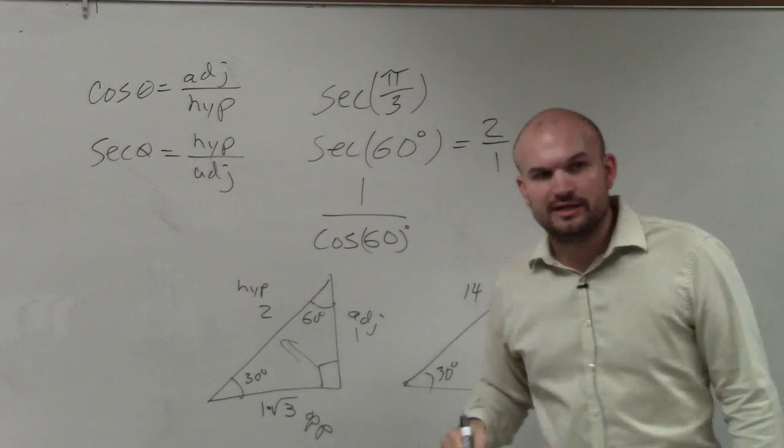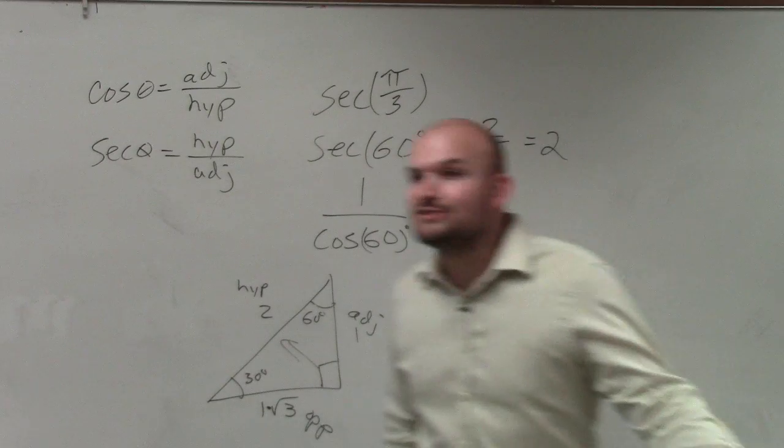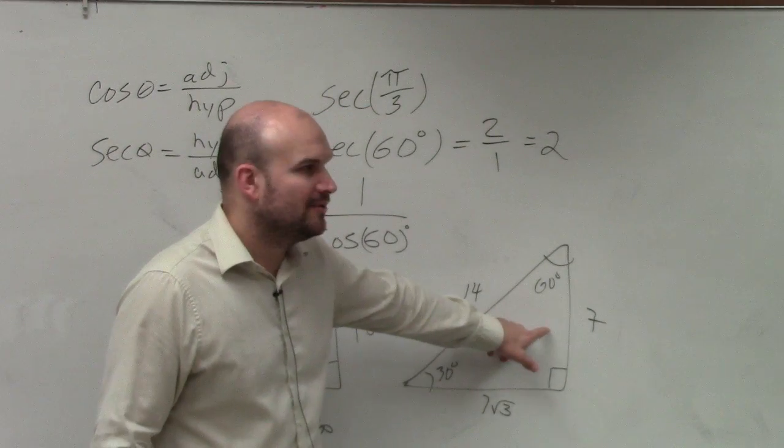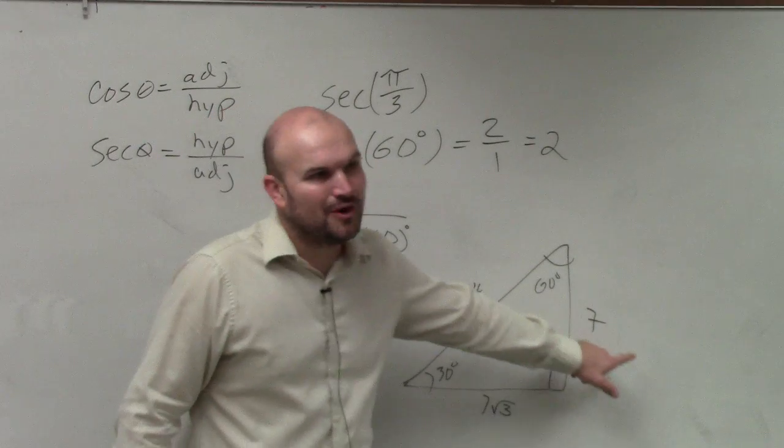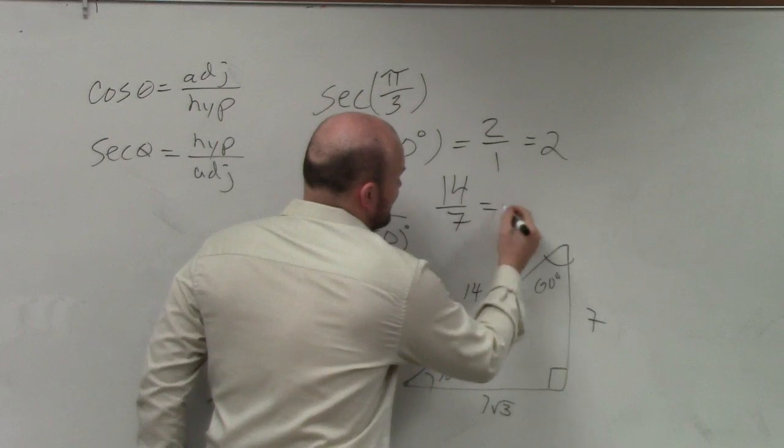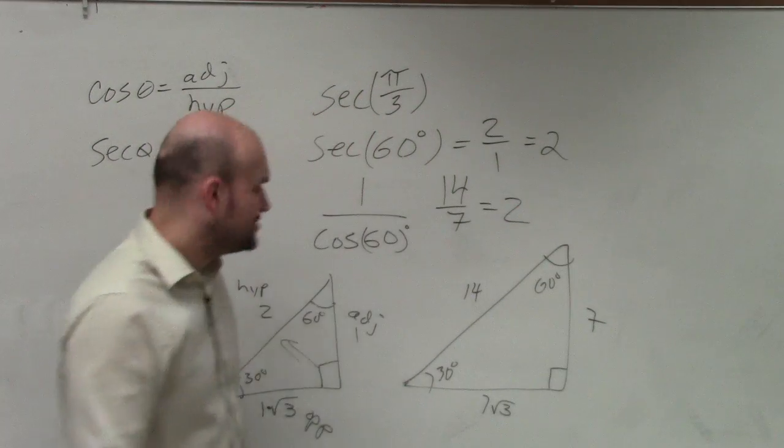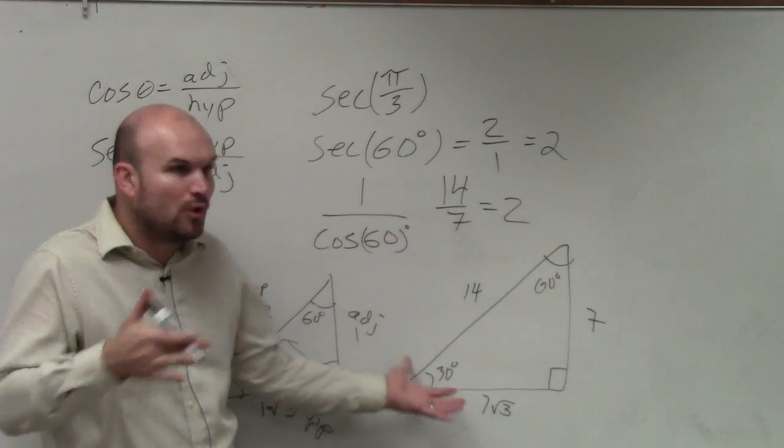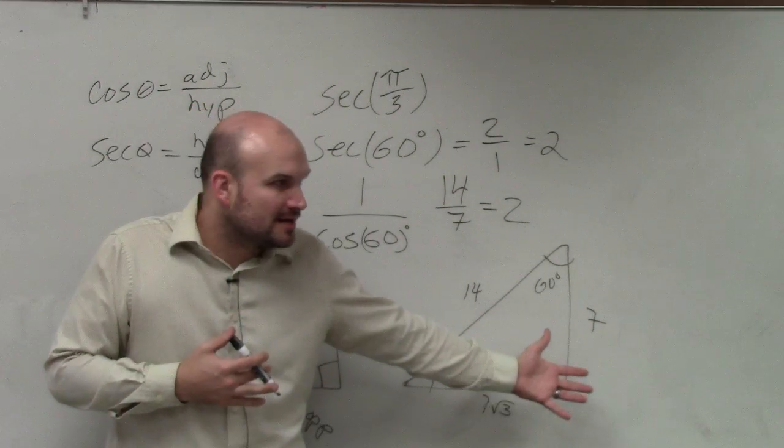No calculator needed. It's 2. Now, let's go and take a look. What if I would have done this triangle? Well, this triangle would have been what? Hypotenuse over adjacent, 14 over 7, which equals 2. So do you guys see, it doesn't matter, special right triangles are proportional with one another. It doesn't matter what the side lengths are.